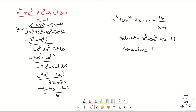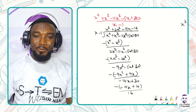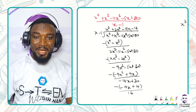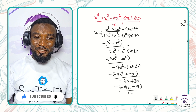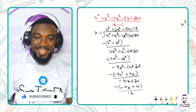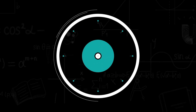We went through the process of long division to divide a polynomial and find the quotient and the remainder. In our next lesson we want to look at the Factor and Remainder Theorem and how we can apply dividing polynomials. Remember to like, share, and subscribe to my YouTube channel. See you in the next lesson!